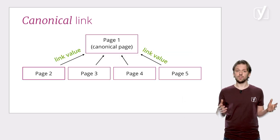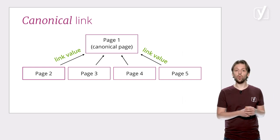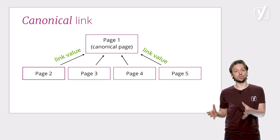It gets even better. By identifying the canonical version, you pass on link value from all its twins, brothers and sisters to that canonical version.